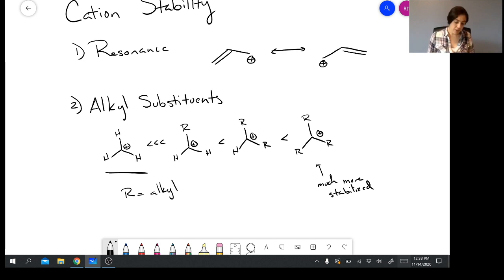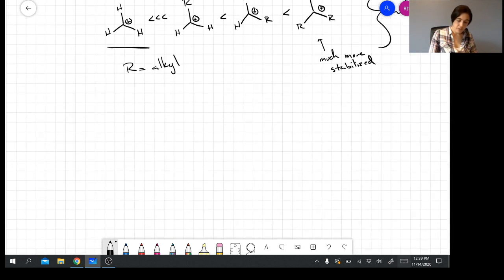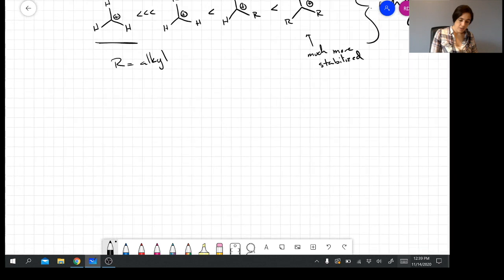It's going to be actually very hard to make a methyl carbocation, whereas if you make a carbocation out of a tertiary carbon, you're going to have a much easier time of that. So we hopefully understand resonance. Let's talk about why. Why do we observe this trend? Why is something that has alkyl groups surrounding it more stable than the system that has just hydrogens?